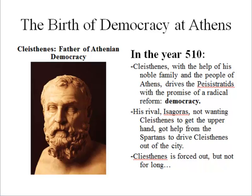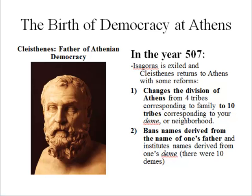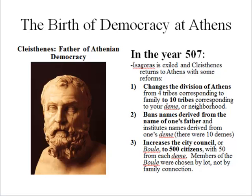Cleisthenes did this by promising the Athenians democracy in return. His rival Isagoras, not wanting Cleisthenes to get the upper hand, got help from the Spartans to drive Cleisthenes out of the city. However, Cleisthenes came back and in 507 stirred things up. He changed the division of Athens from four tribes that corresponded mainly to people's families to ten tribes that corresponded to where you lived — your neighborhood. These tribes were called demes. He banned names derived from one's father and instituted names derived from one's deme, so you would be 'Bob from Silver Spring' rather than 'Bob Smith.' He increased the city council, or boule, to 500 citizens, with 50 from each deme, so each deme was equally represented.